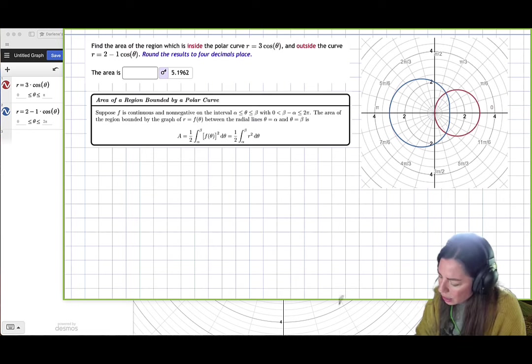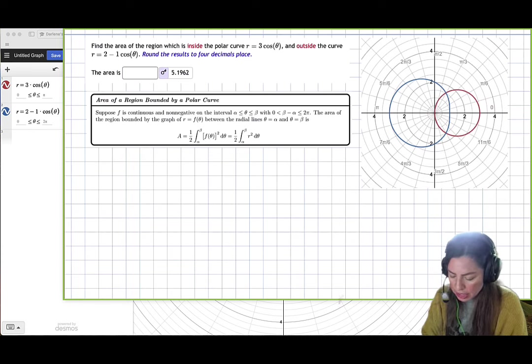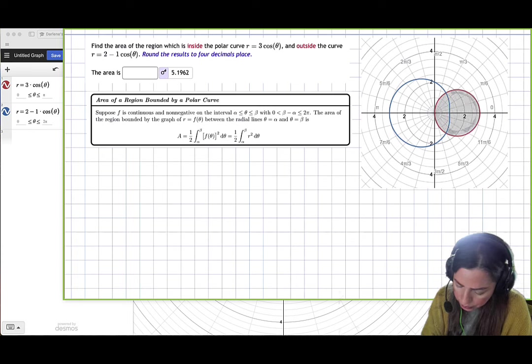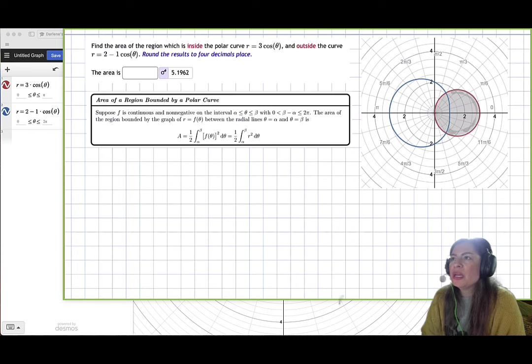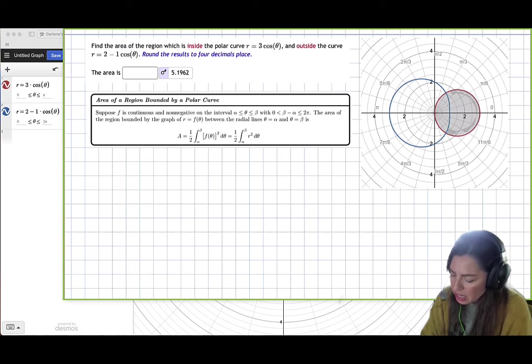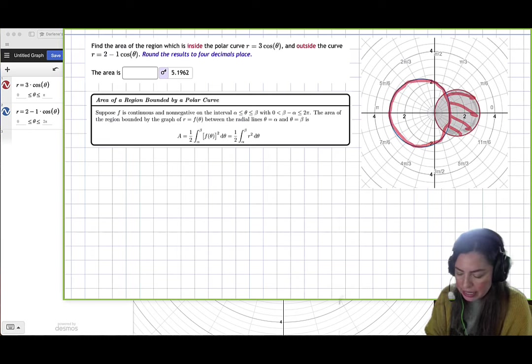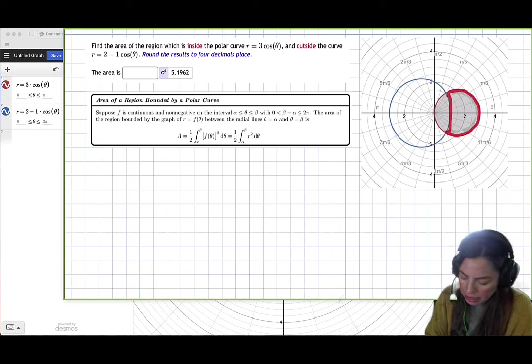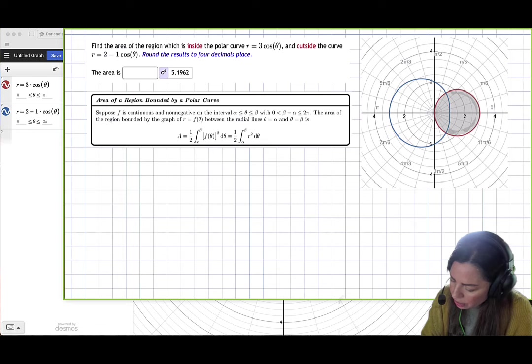It says find the region inside the polar curve 3 cosine theta. So that one was the red one. So I'm going to just shade the whole region. And then we're going to find it inside now, but outside the curve r equal to 2 minus 1 cosine theta. So outside of this blue curve, outside of it. So it can't be inside. So notice that it's going to be this little area here. So then I'm going to shade that in a little bit of a deeper color and I'll put that in red.